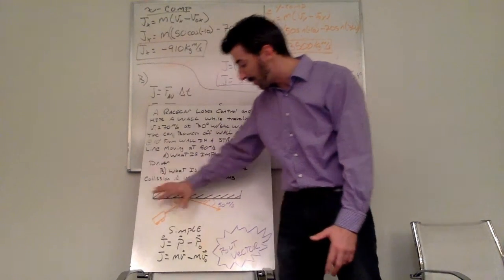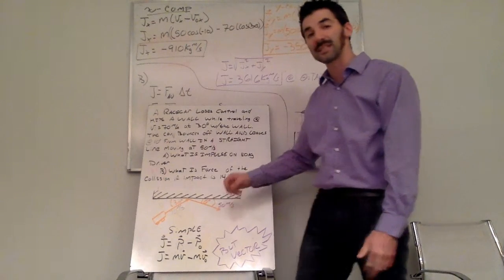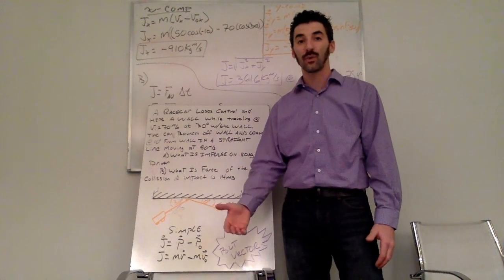Mass times initial velocity, but it can't be that simple because I have these angles and, again, momentum is a vector quantity.